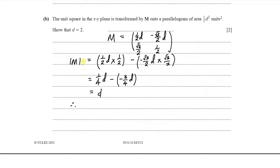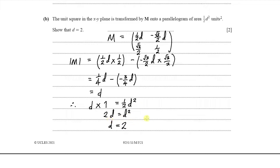The determinant of M is d. Multiplying the determinant of M, which is d, by the area of the unit square, which is 1, they say this transforms to a parallelogram of area ½d². So we have d = ½d². Multiplying both sides by 2 gives 2d = d², and dividing both sides by d gives d = 2. Note that d also has the value 0, but since d cannot equal zero, d = 2.